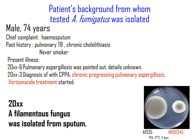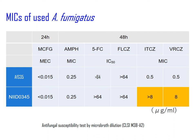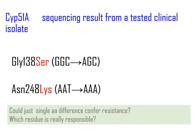The clinical isolate showed slower growth and less conidiation than the reference strain. NIID 345 was susceptible to amphotericin B and micafungin, but highly resistant to itraconazole and voriconazole. Sequencing of the CYP51A gene in these two strains revealed two single nucleotide polymorphisms: glycine-138 to serine and asparagine-248 to lysine.